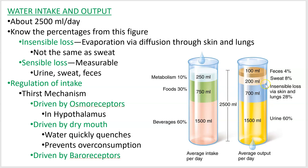Comparing that to output: you're going to lose about the same volume through your urine, so about 60%. Then you lose about 8% through sweat, your feces aren't completely dry so you lose about 4%, and then there's what's called insensible loss.